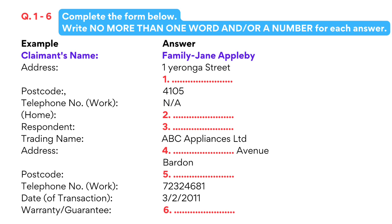You will see that there is an example that has been done for you. On this occasion, only the conversation relating to this will be played first. Good afternoon. How can I help you? Good afternoon. I'd like to lodge a claim. Certainly. Name? Emily Jane Appleby. Appleby? That's an unusual name. Sorry, what did you say your first name was again? Emily Jane. The woman gave her first name as Emily Jane, so Emily Jane has been written in the space.